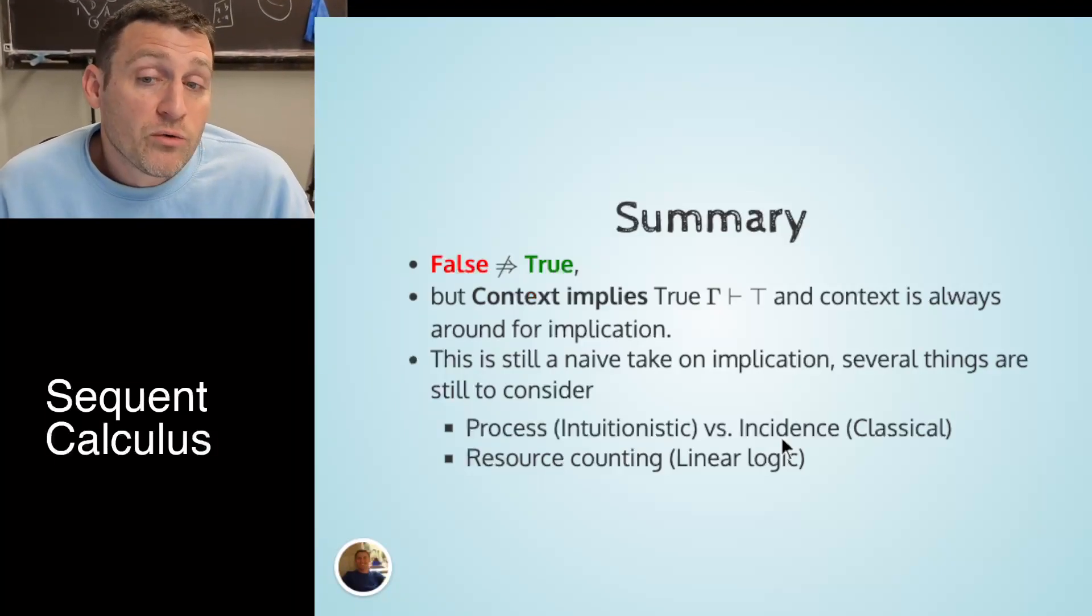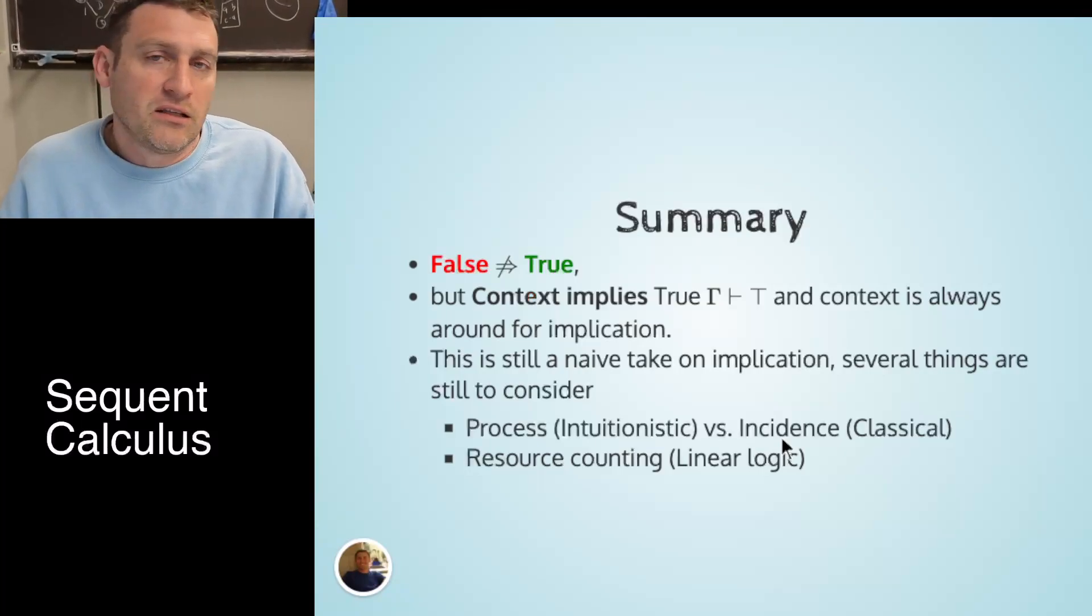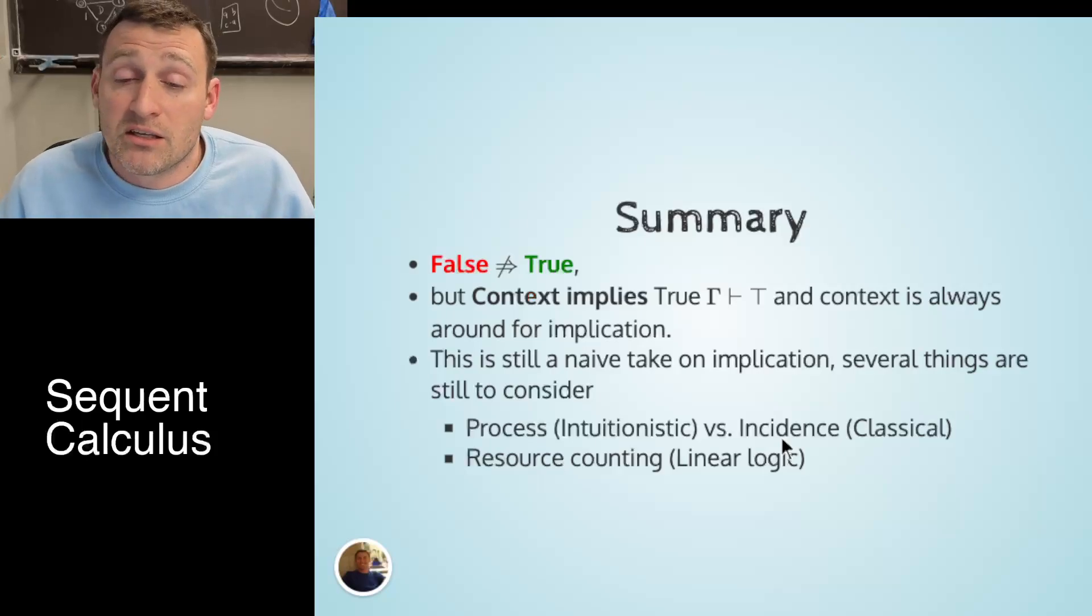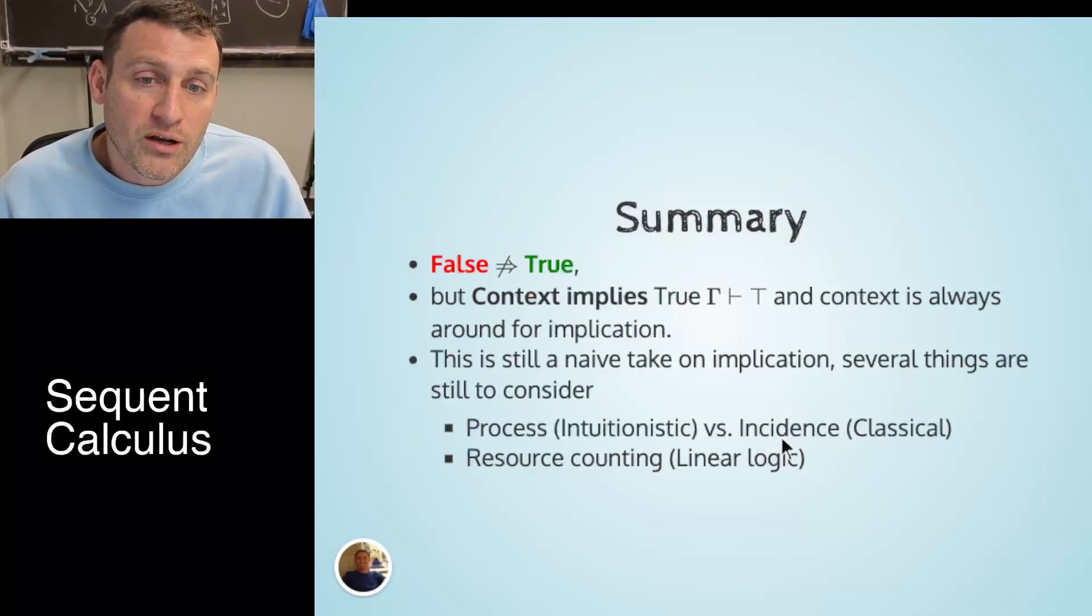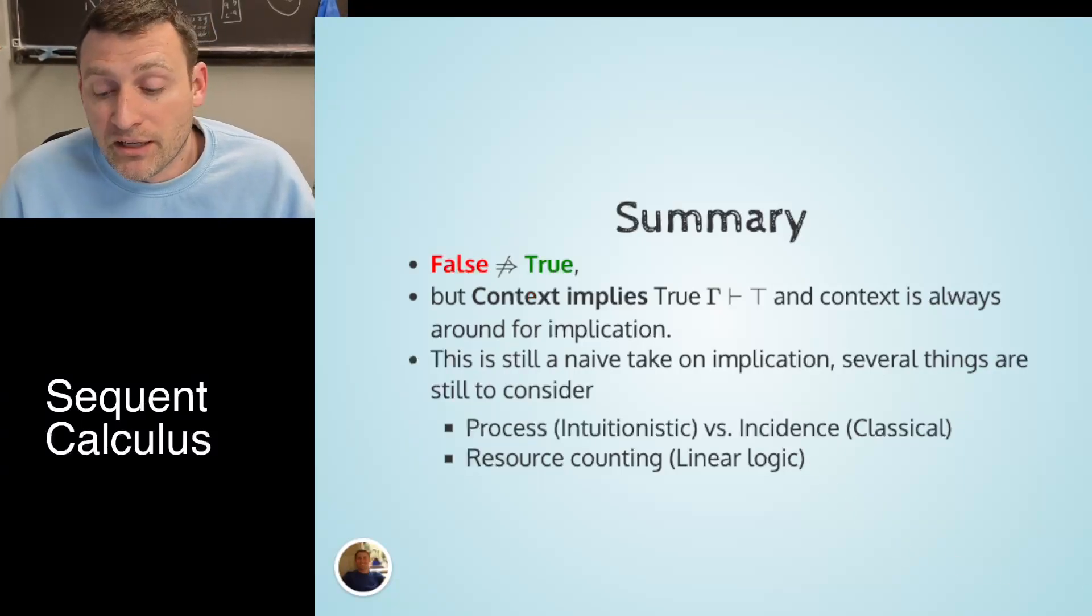So in summary, false doesn't really imply true. But context often does imply true. And that's how we can explain that even a false premise might still lead to a true conclusion. Because the false premise is not the only thing that's leading to the conclusion. It's the context and the false premise. There's still many things we need to do with implication. We haven't quite discerned whether we think of things intuitionistically, classically, paraconsistently, linear logic, there's resource counting, there's lots of things to explore. But we've got on the board a symbol with the right rules that we can now tease out the subtleties that we'll need. Until next time.